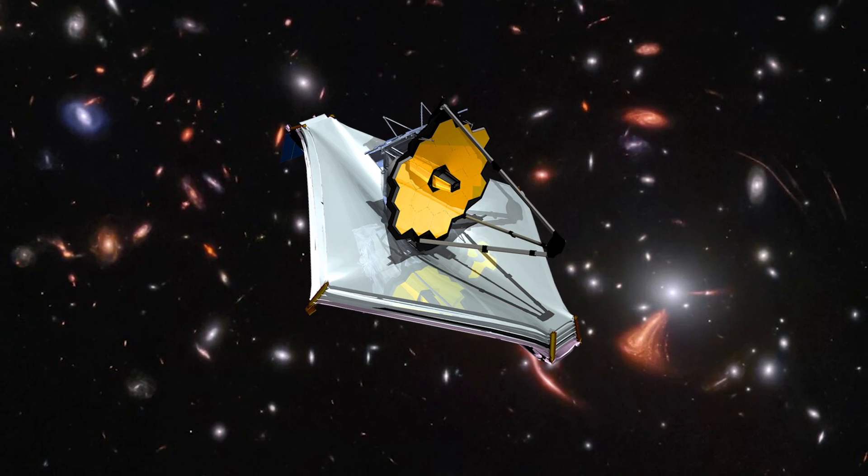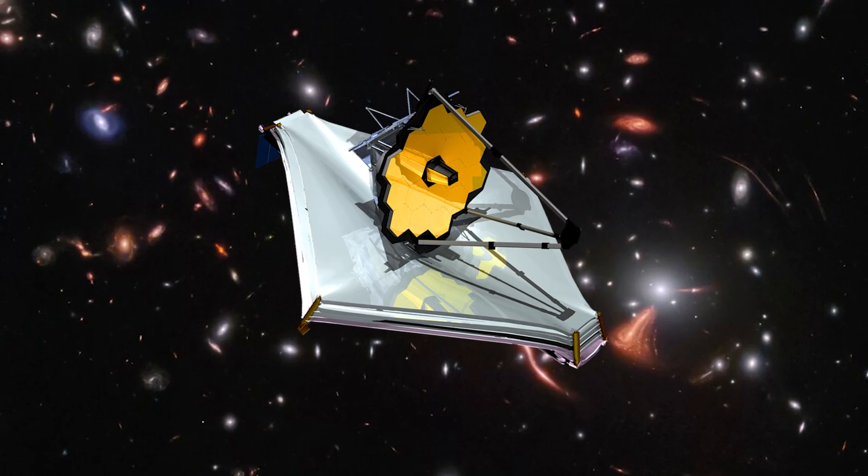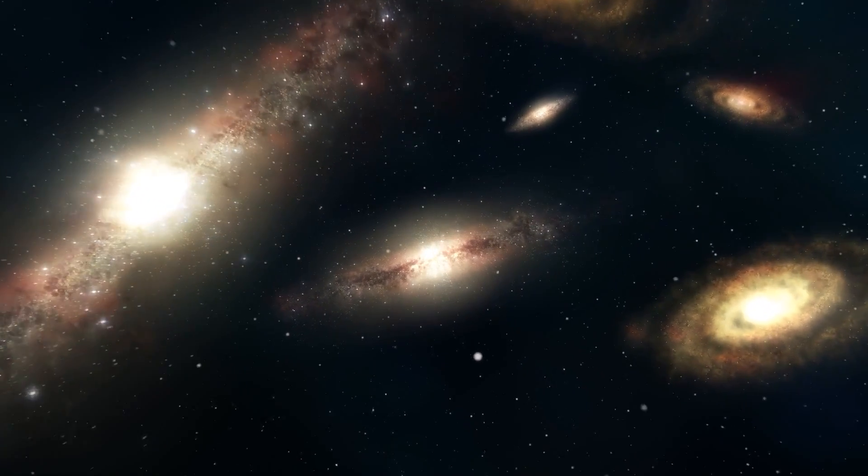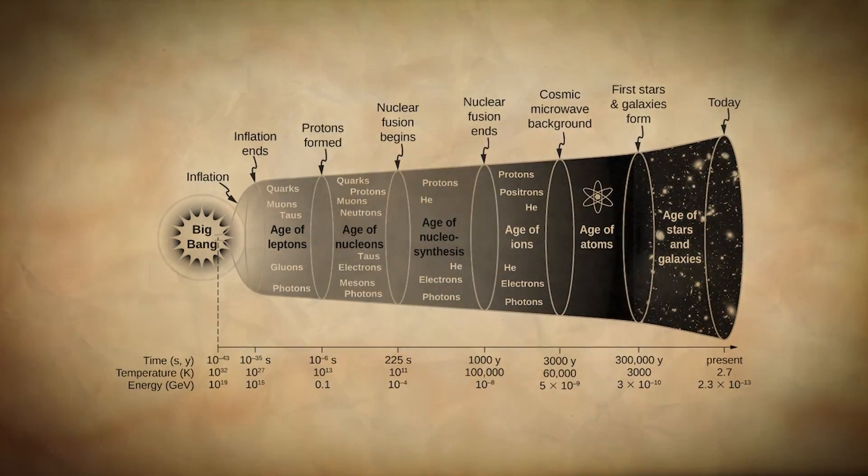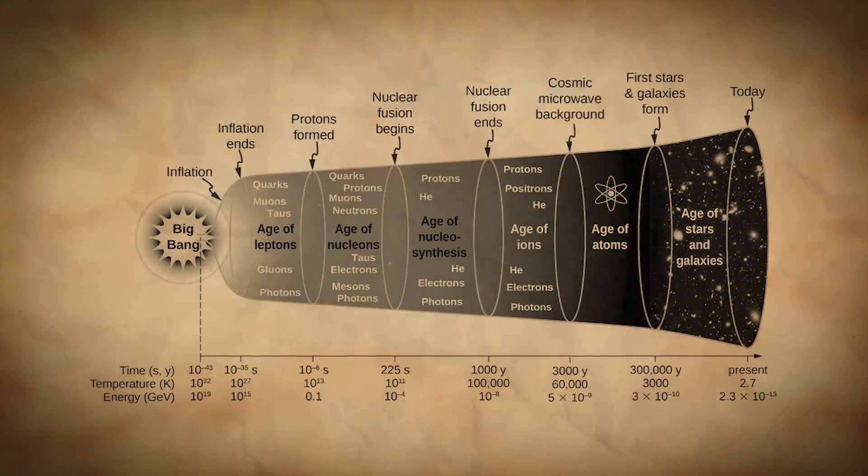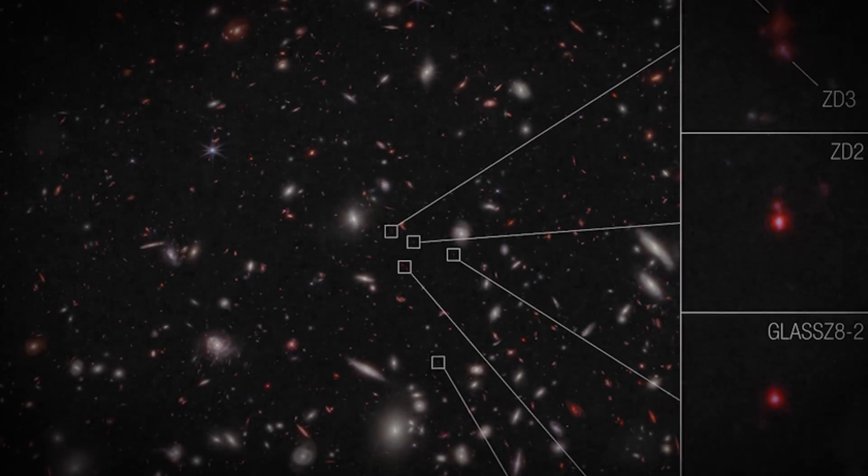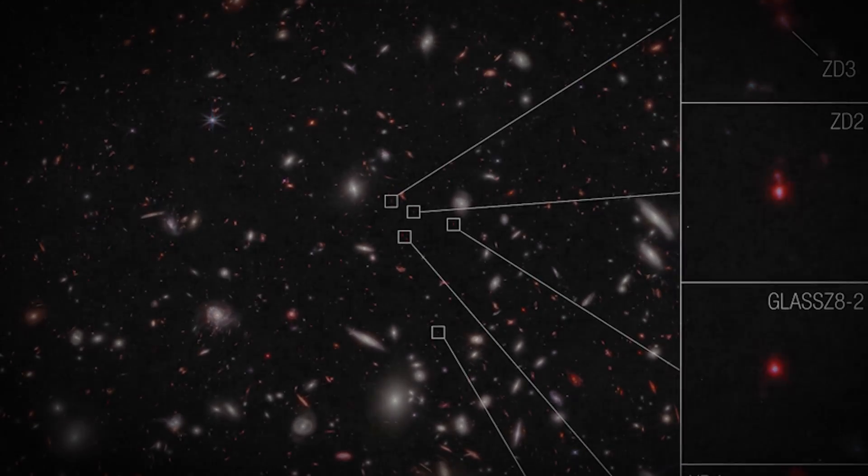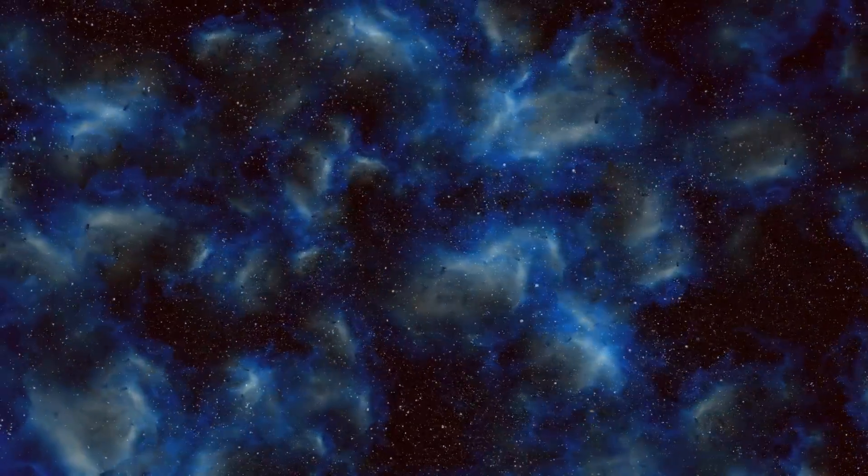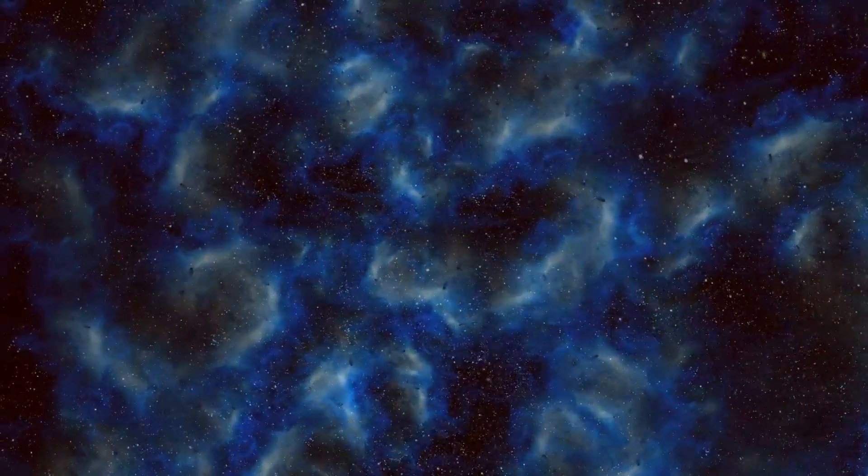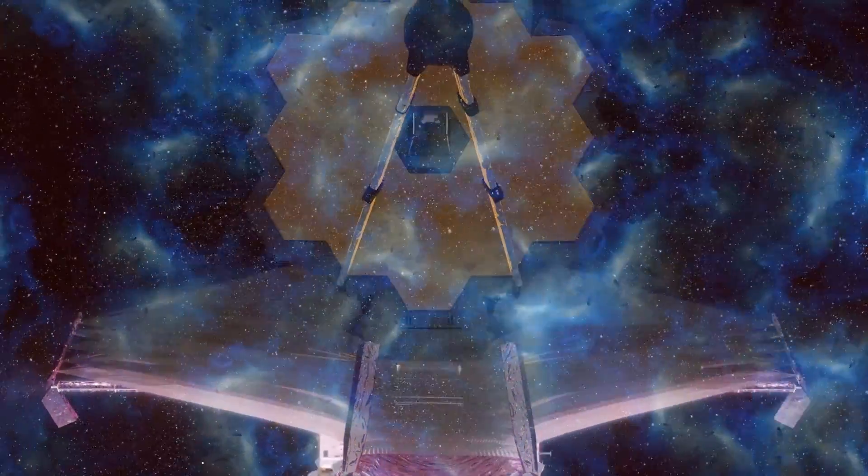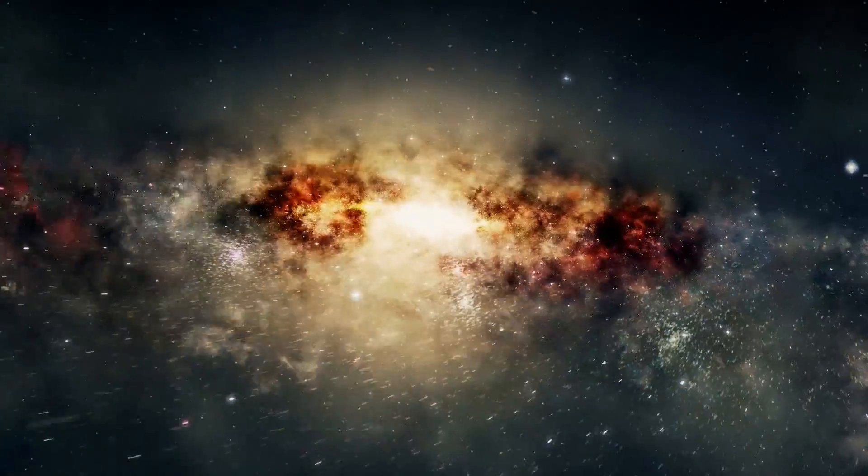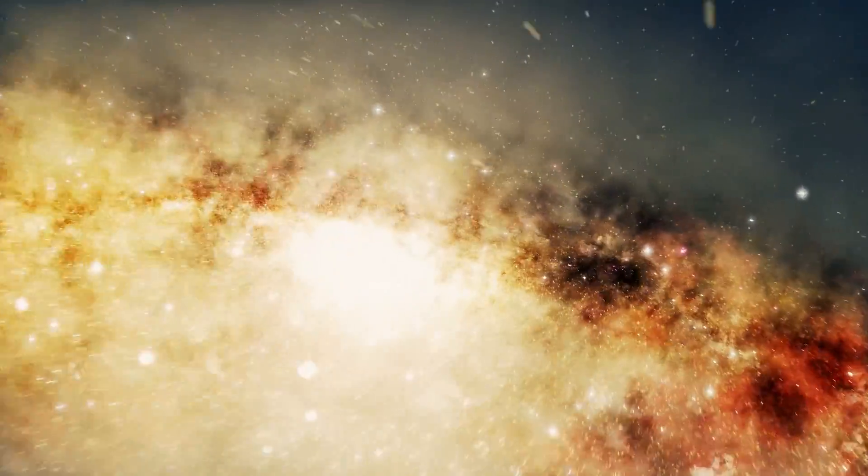JWST isn't just giving us amazing snapshots of the early universe, it's also throwing some serious shade at our current understanding of how galaxies formed. Remember that theory about galaxies slowly merging over billions of years? James Webb is out there finding full-grown galaxies just a few hundred million years after the Big Bang. The traditional view was that dark matter's gravity slowly pulled in gas, which then clumped together to form stars and galaxies. But James Webb's discoveries suggest this whole process happened way faster, with stars forming, galaxies swirling and even merging at a much more rapid pace. It's like the universe hit the fast-forward button in its early days.